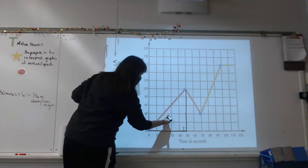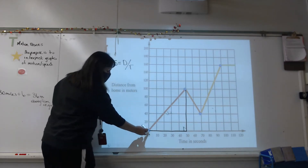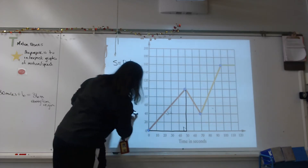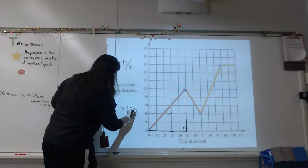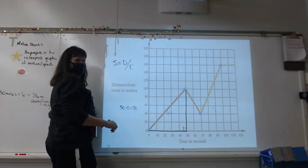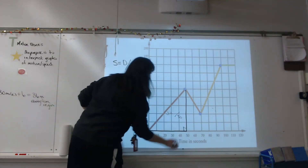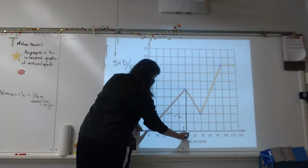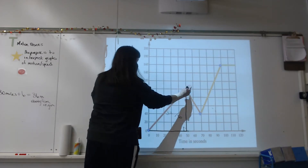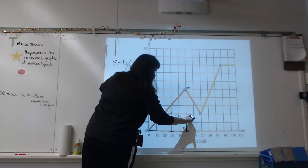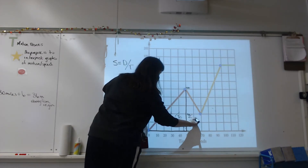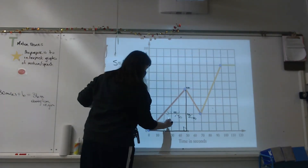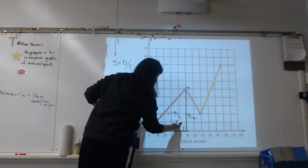For section one: speed equals distance over time. My time goes from zero to 50 seconds — so 50 seconds passed. On the y-axis, I go from zero to 100 meters. So I've got 100 over 50, and my speed is 2 meters per second.